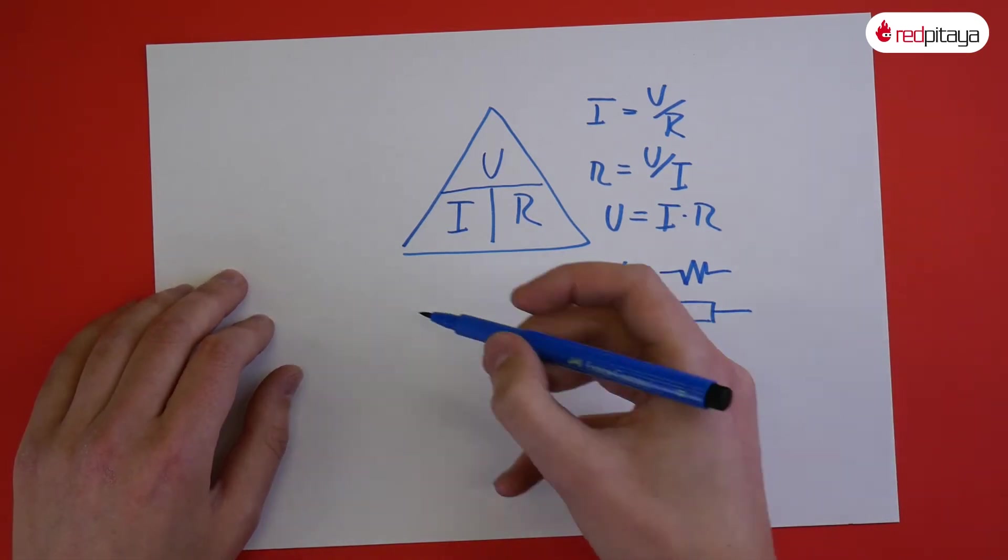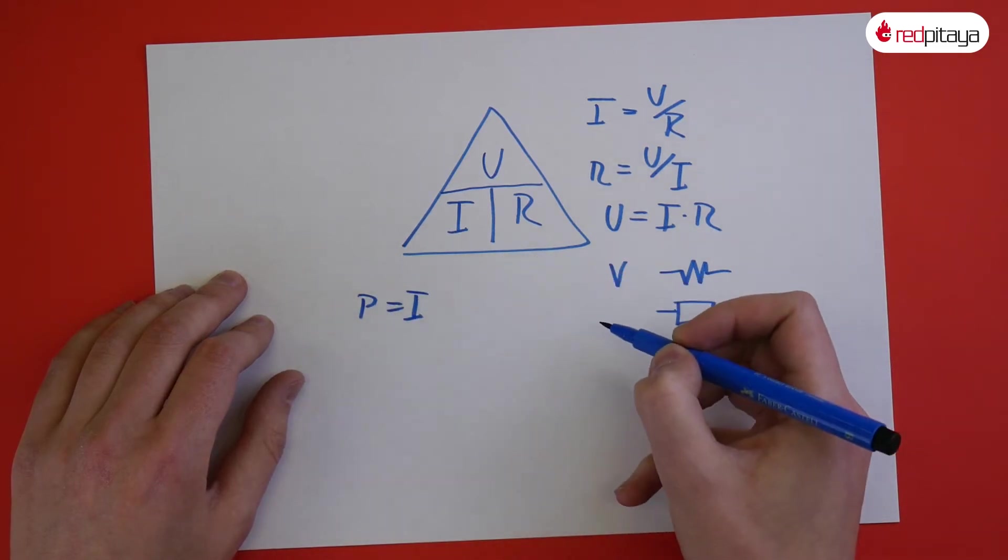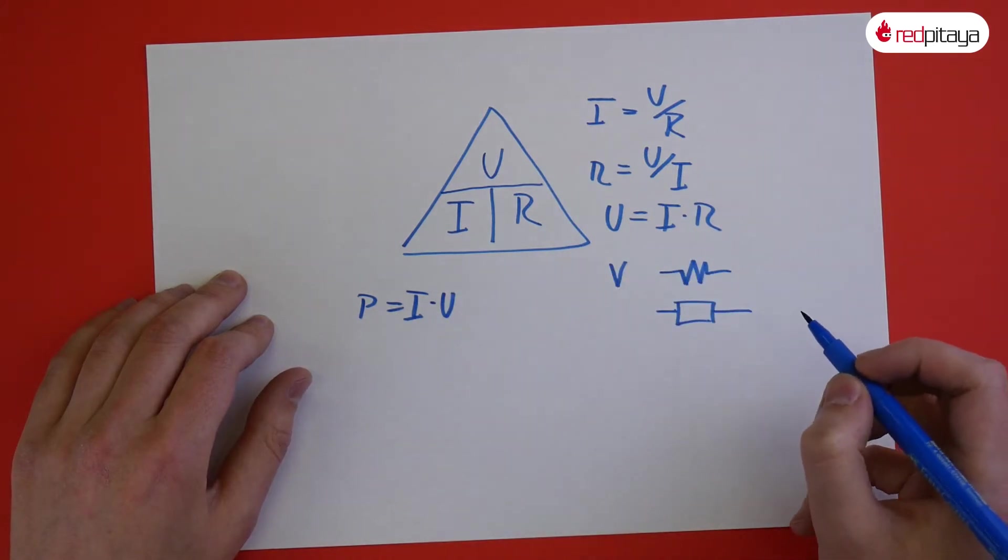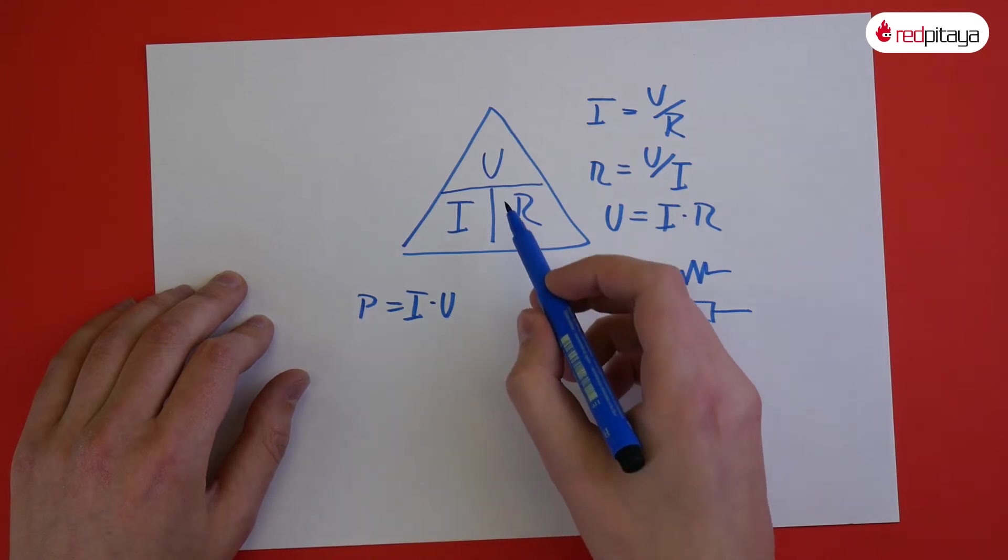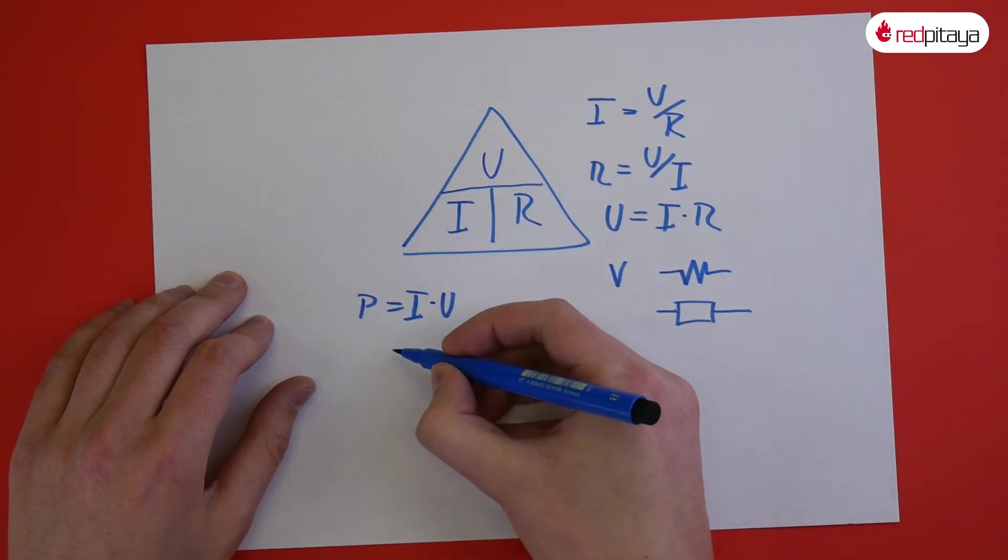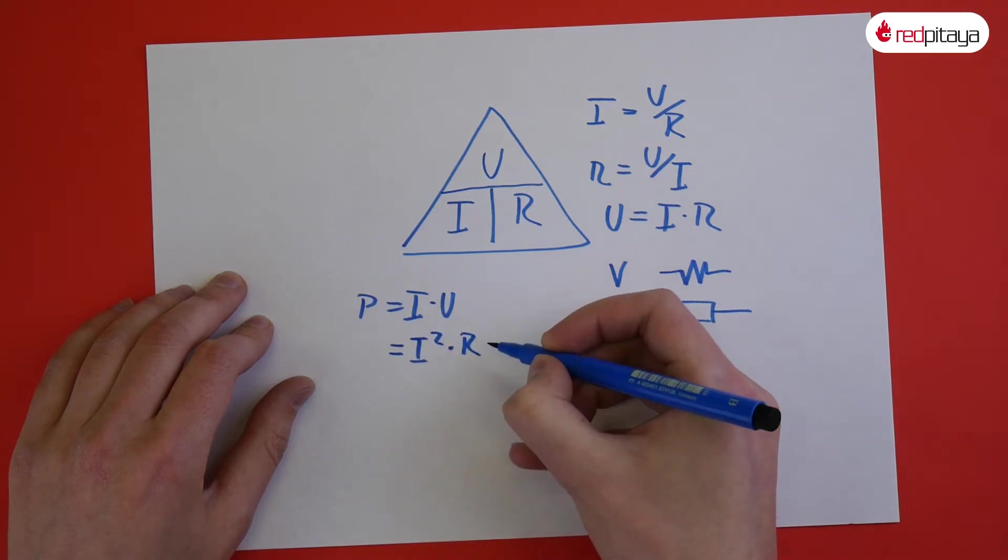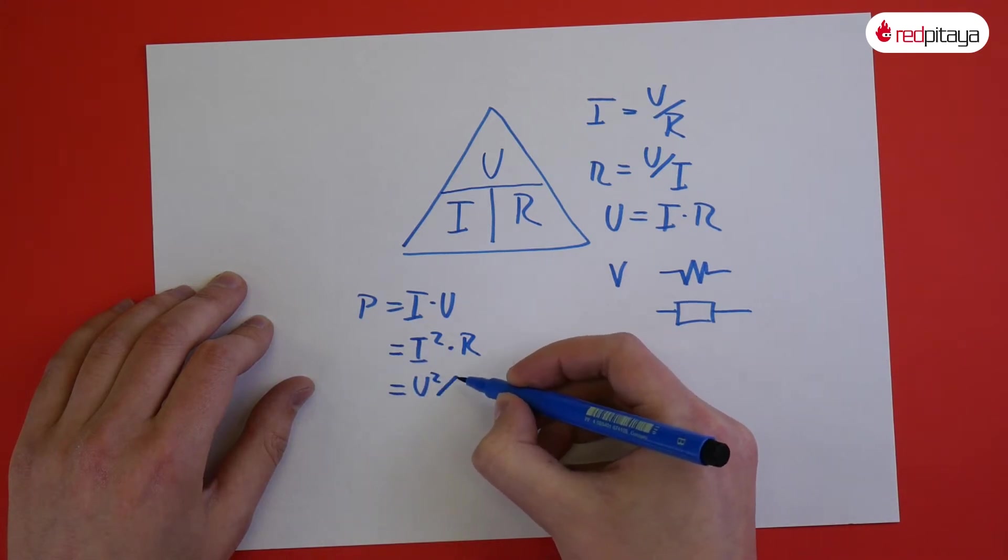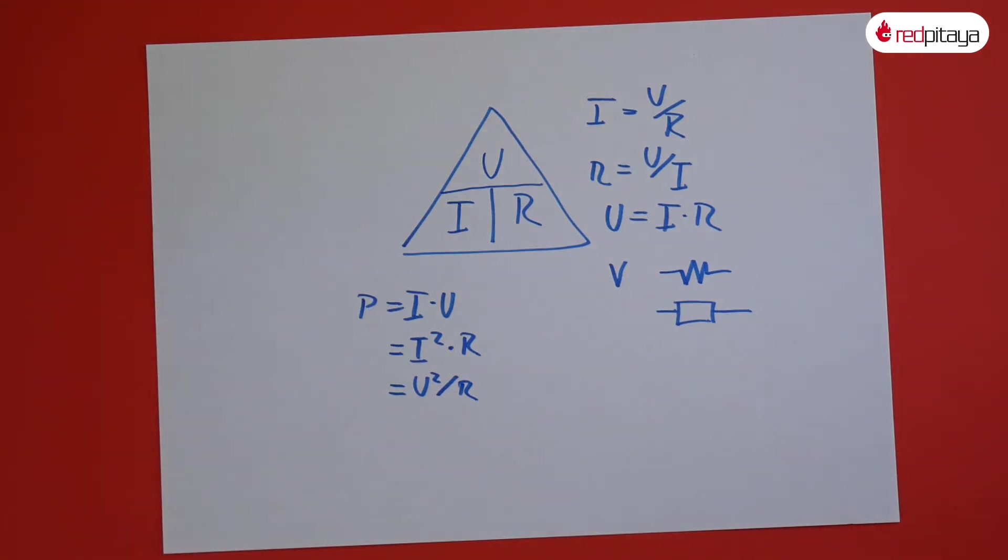Back to equations now. Power that is being dissipated on a component equals current flowing through it and voltage drop across it. Note that we can substitute voltage for a function of current and resistance or current for a function of voltage and resistance. Plugging that back into the power equations, we get power equals current squared times resistance and voltage squared over resistance.